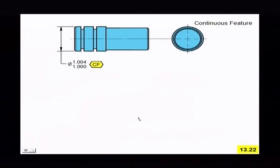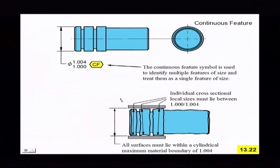So what this continuous feature is supposed to do is the continuous feature symbol is supposed to take all three diameters and treat them as a continuous feature. So now what you're getting then is all of them have to lie within the size and form boundary of one inch four thousandths. So what this is doing is this is just keeping the coaxiality between all three of these diameters.